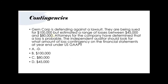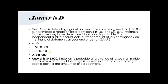Under US GAAP, we don't book $100,000 — the estimated loss is a range between $45,000 and $80,000. Should we book the higher amount? That would be conservative — $80,000 — but that's not correct. US GAAP says to book the minimum amount of the range: $45,000. We book the minimum in order to avoid having to recognize a gain in the future for any excess estimate.